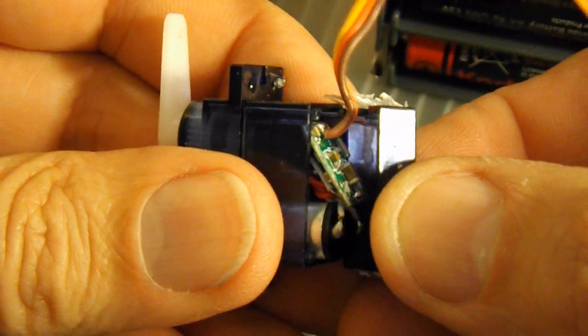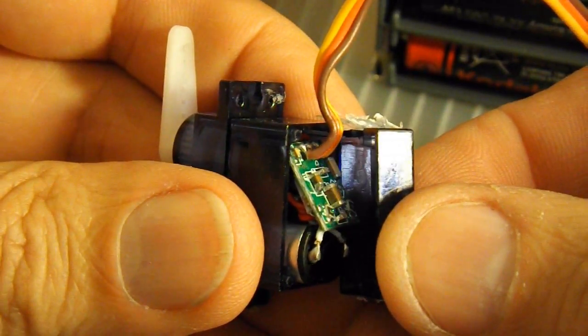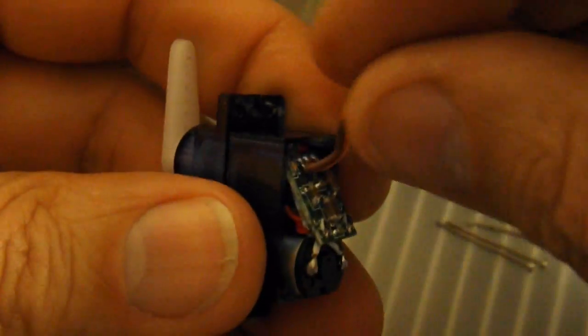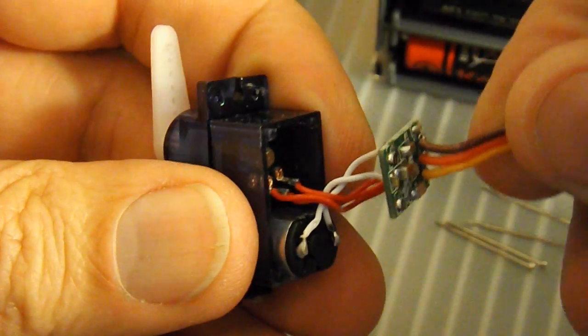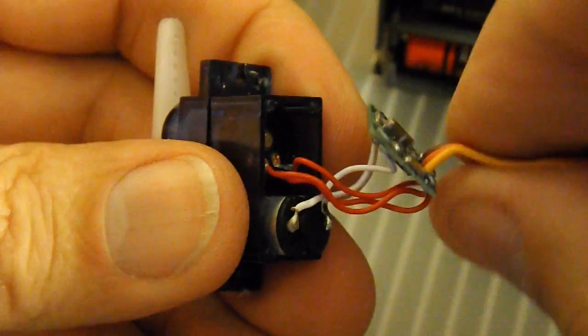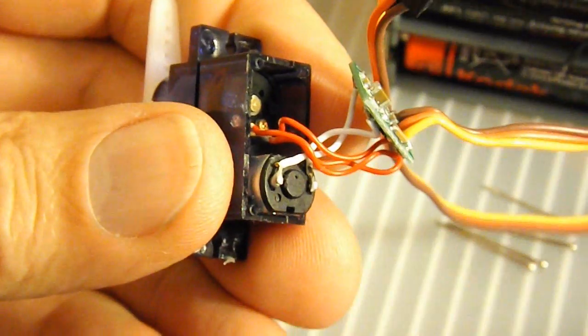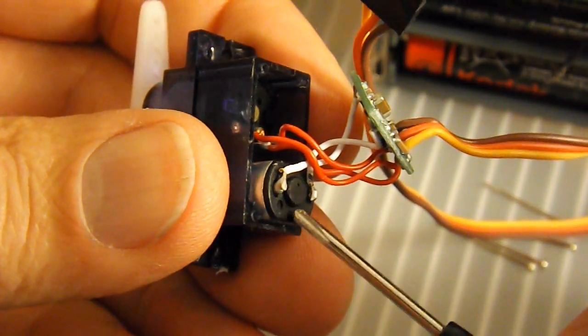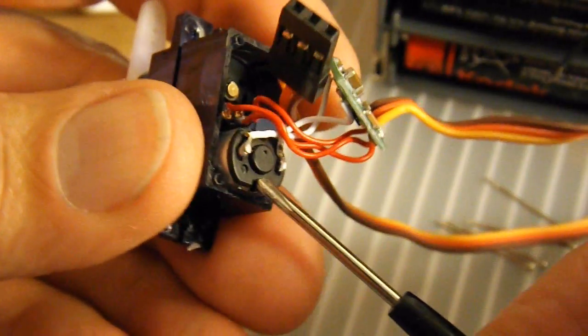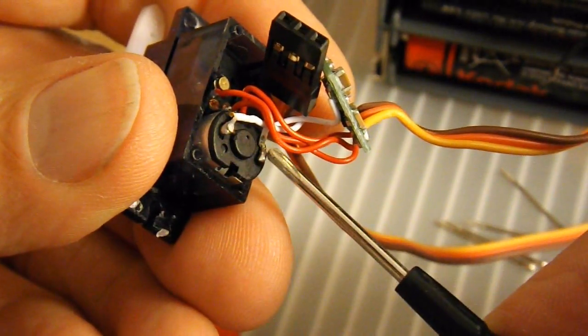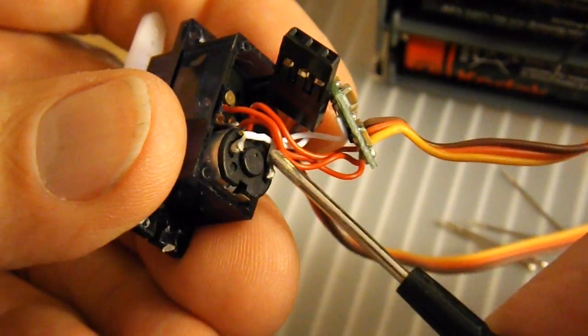Right. The bottom end has got the circuit board in it, which we want to take out. So that's the electric motor just there. So we need to make connections to those two terminals.